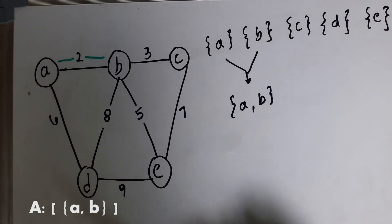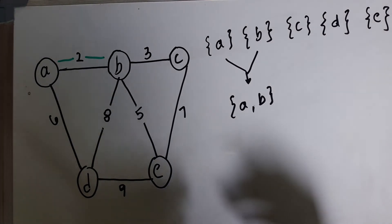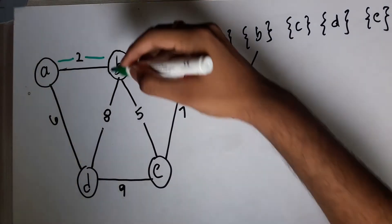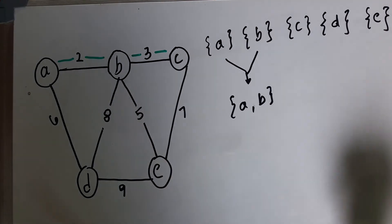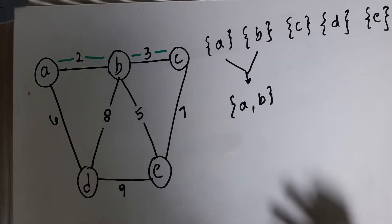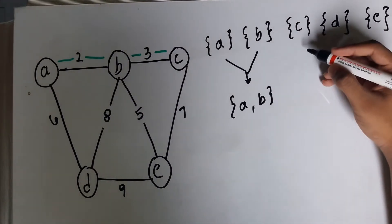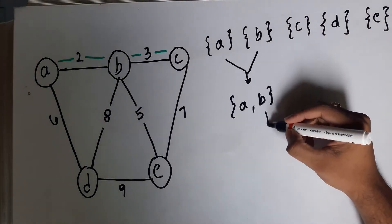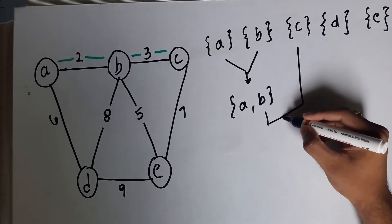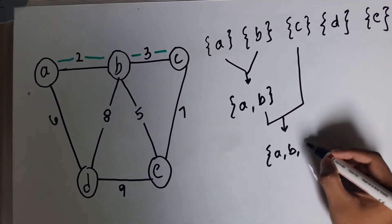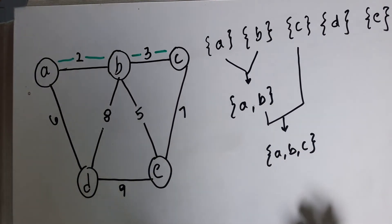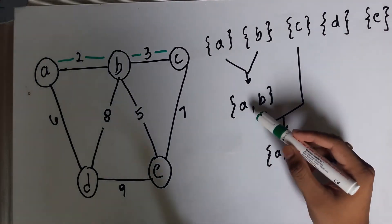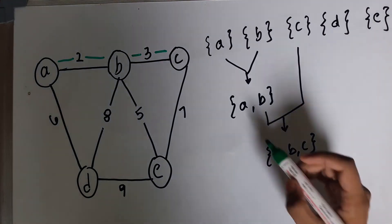We discard that edge from the list and choose the next lowest edge, which is B and C. We check if B and C belong to the same set. They do not, so we need to merge them. They become a single set {A, B, C} and the representative of this set is C. But how do we check if elements belong to the same set?